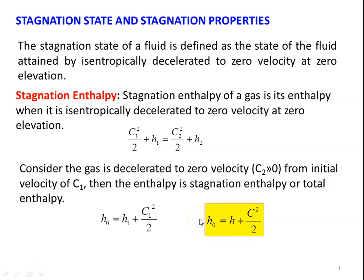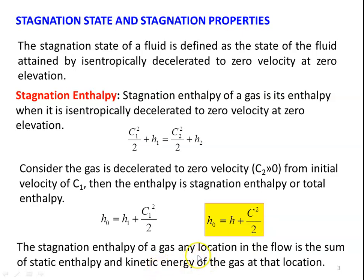In general, the stagnation enthalpy equals H + C²/2. Looking at the right-hand side, there are two components: one is enthalpy, and another is C²/2. So the stagnation enthalpy of a gas at any location in the flow is the sum of static enthalpy and the kinetic energy of the gas at that location. This is the static enthalpy, and C²/2 is the enthalpy due to velocity — the kinetic energy of the gas.